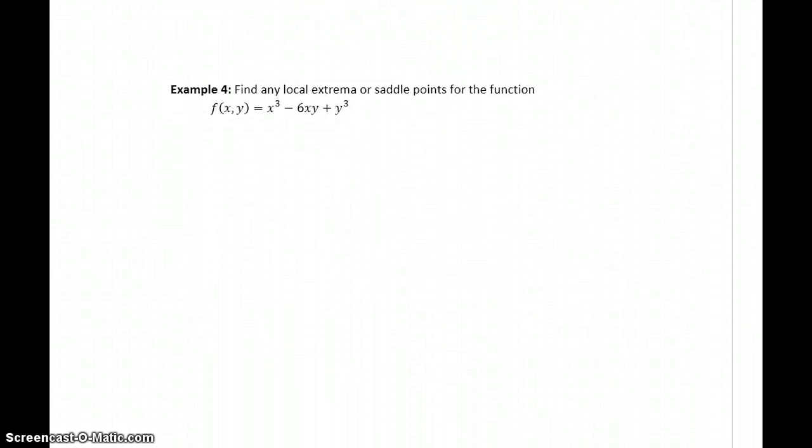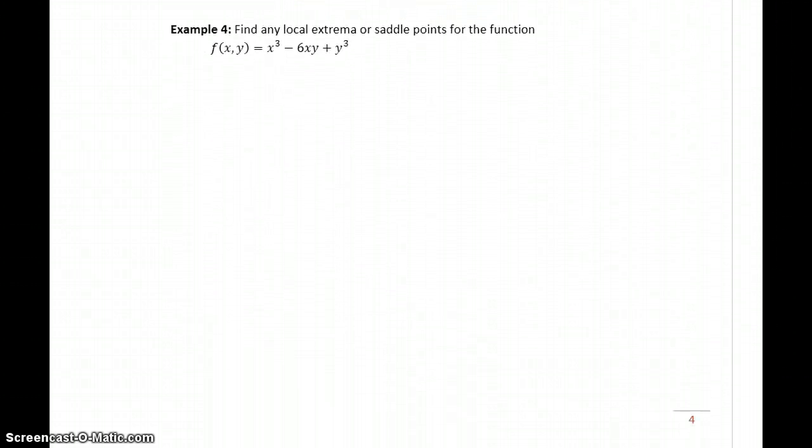Now, we do want to spend a little bit more time with example 4, since this problem is going to be a little more complex than the previous examples. We'll start things off identically as we have before. We'll take the derivative with respect to x, which will give us 3x squared minus 6y equal to 0.